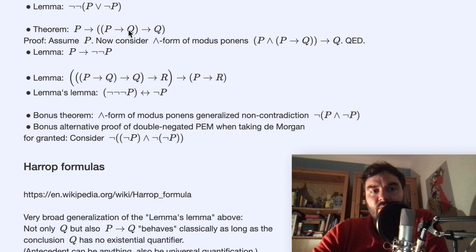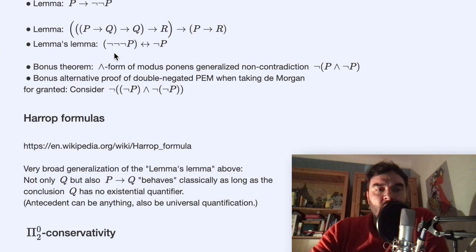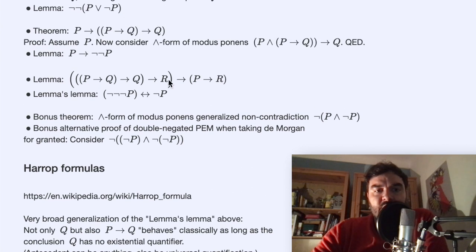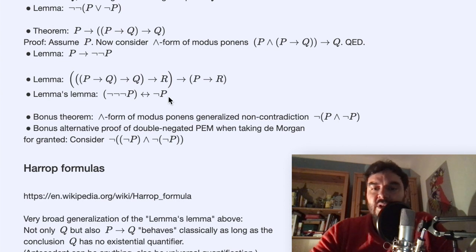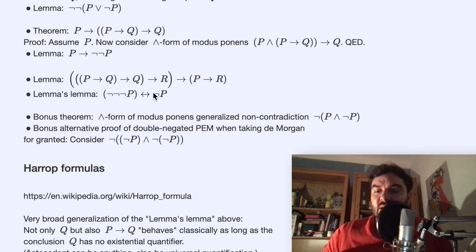The next statement is really just modus ponens. Again, if we take q to be an absurd statement, this says that any proposition implies its double-negated form. Thirdly, if we have three propositions p, q, r and we assume a certain implication, then p implies r. Taking the special case where q and r are absurd (false) statements, we find that a negated statement — not-p for all p — behaves classically in that sense. This is also why you rarely see free negations in books on these logics.